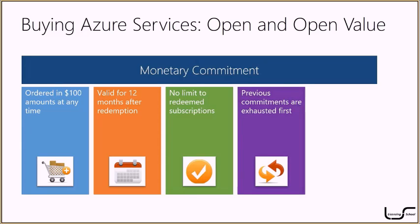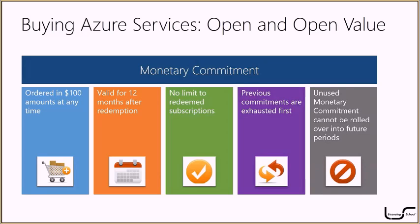Previous commitments are exhausted first — meaning if a customer orders Azure credit and then orders more, Microsoft ensures the initial order is used before starting from the second order, to prevent expiration. This matters because unused monetary commitments cannot be rolled over into a future period — there's a 12-month validity and if you don't use it, you lose it.